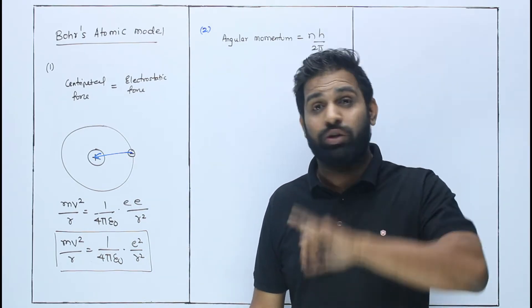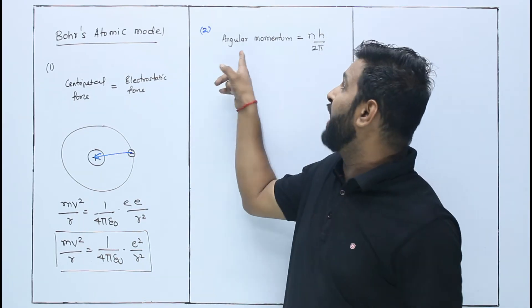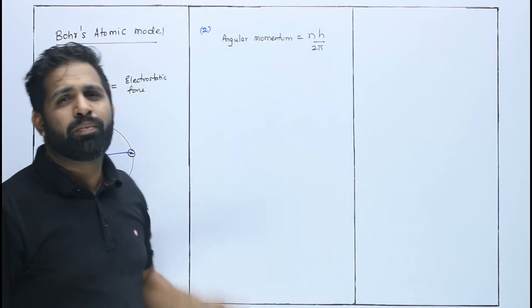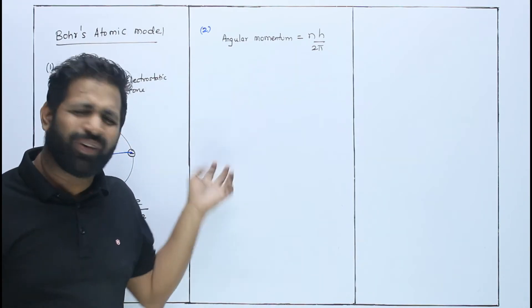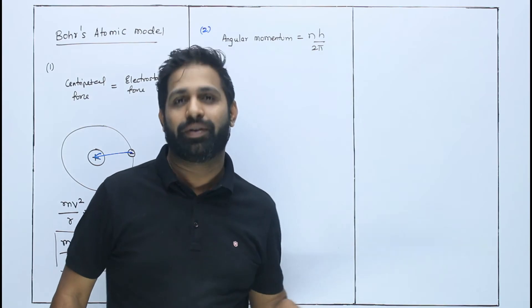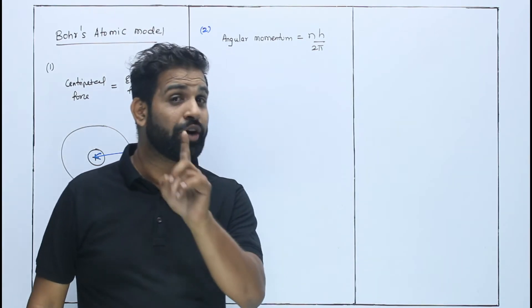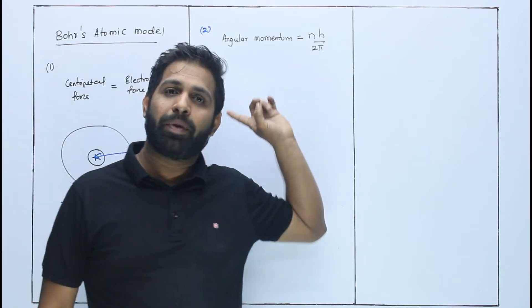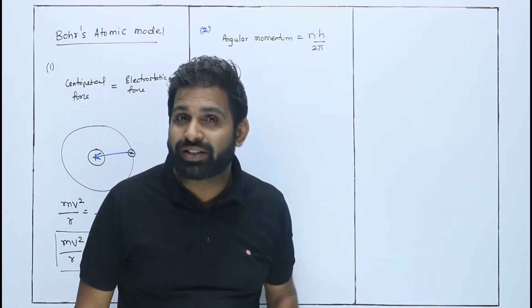It will in its own orbit where angular momentum is integral multiple of h / 2π. People didn't fully understand and asked Bohr to think about it. Bohr didn't properly explain this - this is Bohr's drawback. This postulate was based on assumption.